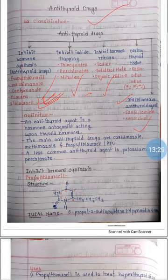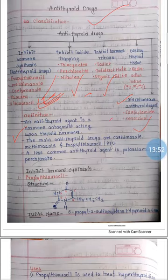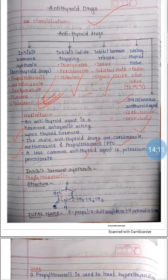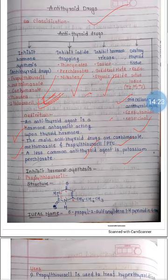An antithyroid agent is a hormone antagonist acting upon thyroid hormones — a thyroid hormone antagonist equals antithyroid agent. The main antithyroid drugs are carbimazole, methimazole, and propylthiouracil (PTU). A less common antithyroid agent is potassium perchlorate.